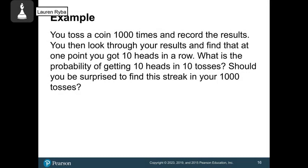So let's say you toss a coin 1,000 times and record the results. You then look through the results where you listed H, T, T, H, whatever you listed, whatever you got, you put an H or a T. You look through the results and find that at one point you got 10 heads in a row. First question, what is the probability of getting 10 heads in 10 tosses, and should you be surprised to find the streak in your 1,000 tosses?